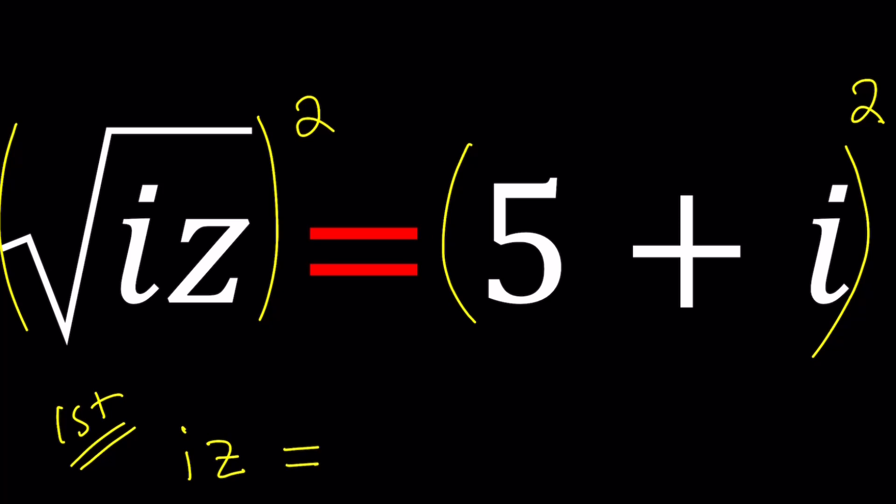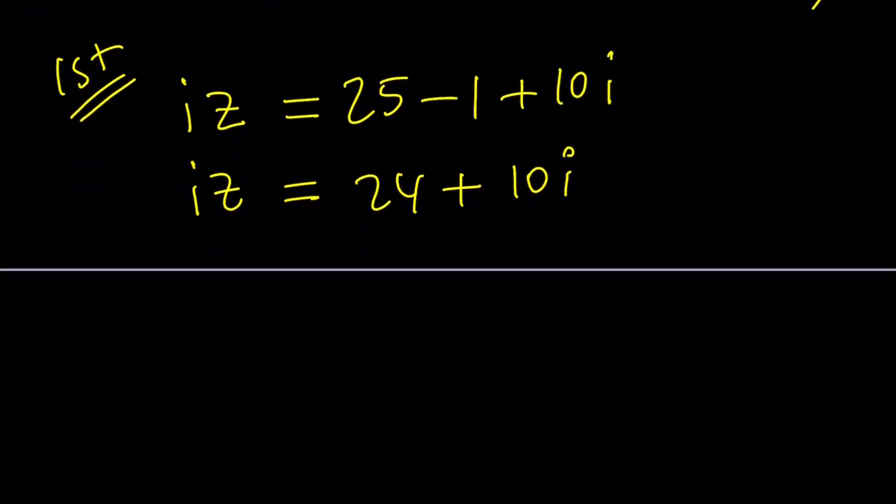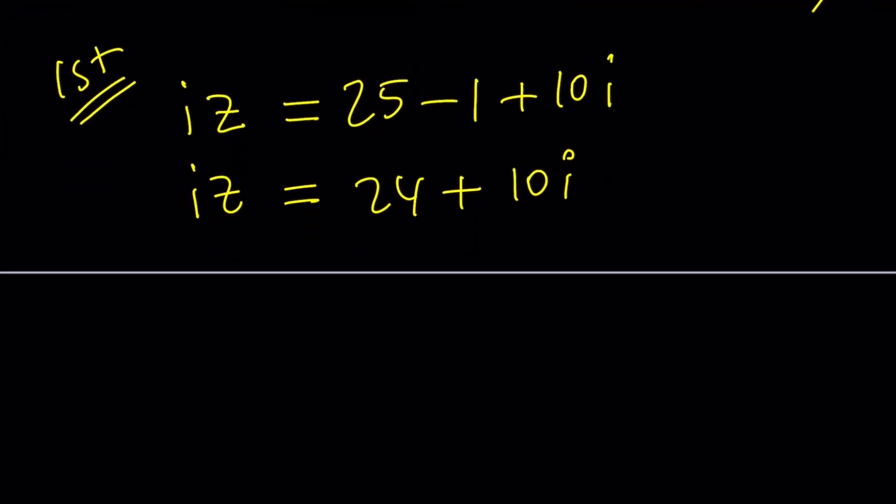That's equal to 5 plus i squared. 5 squared is 25, i squared is negative 1, and their product is 5i. Double that, you get the answer. So iz is going to be 24 plus 10i. Now, this is going to be fairly easy because all we have to do is divide by i, or if you really want to do this the hard way, you can go ahead and do the following.